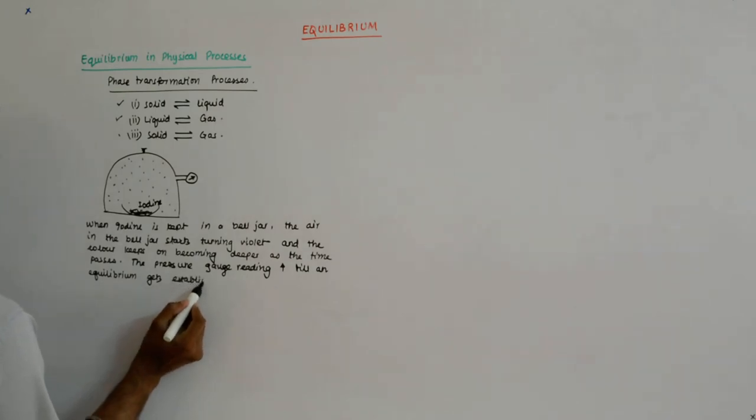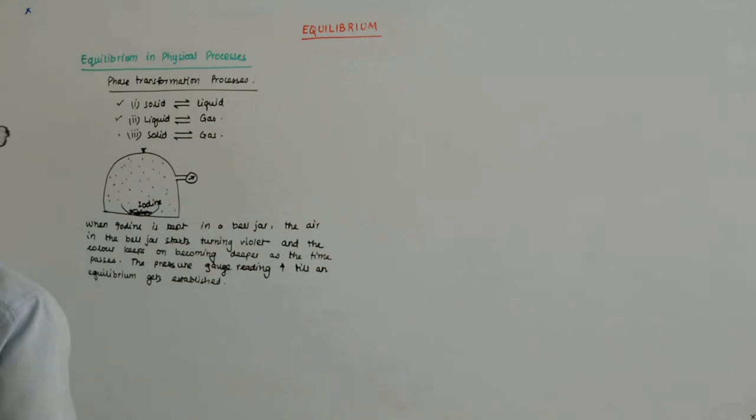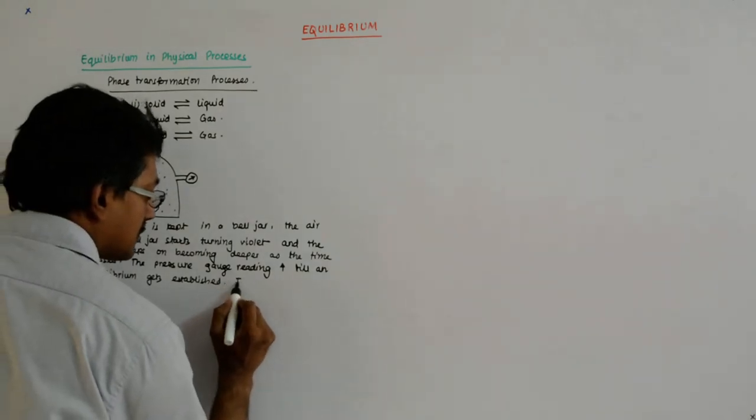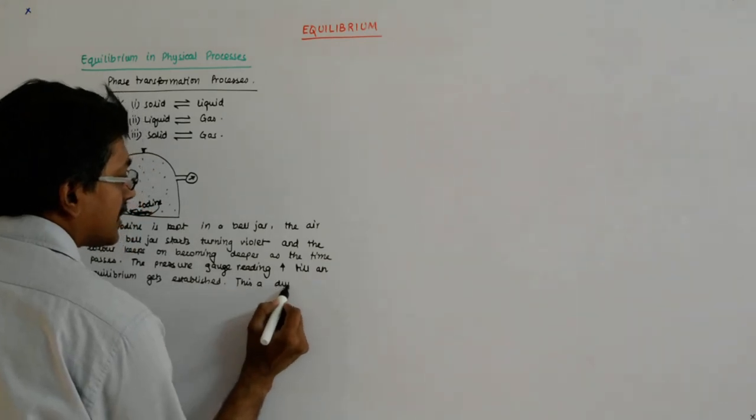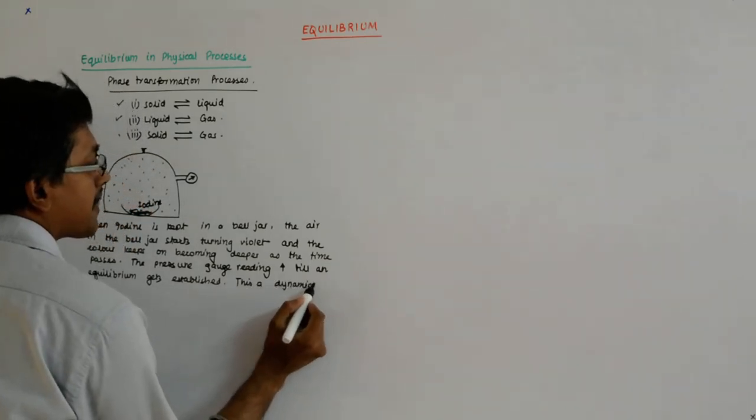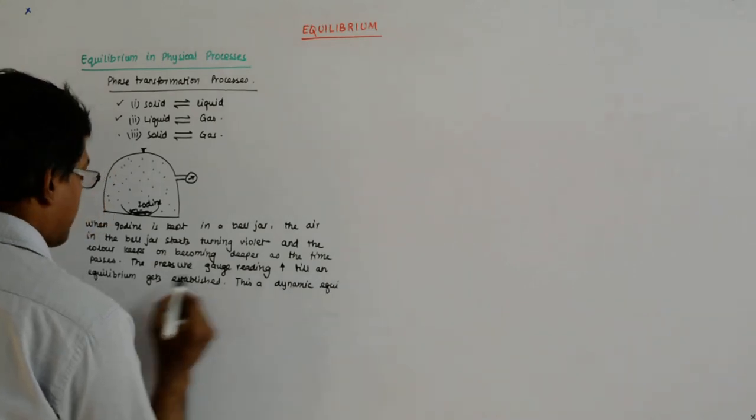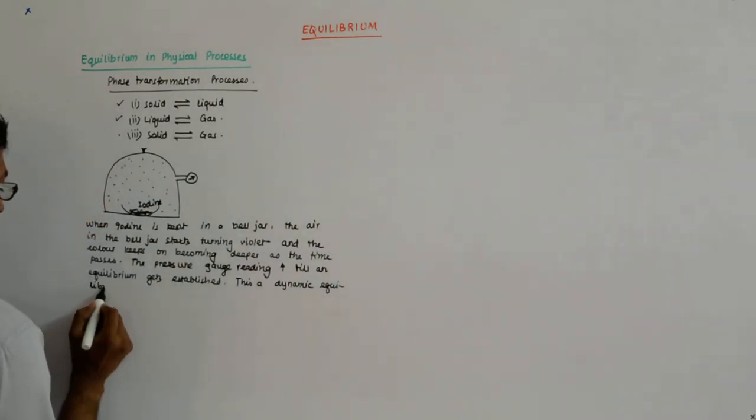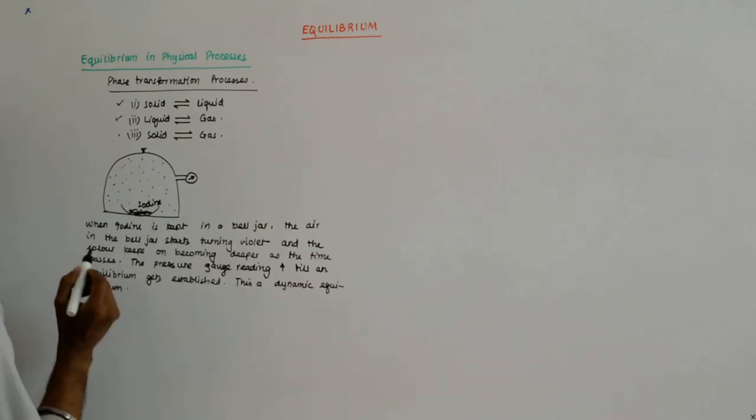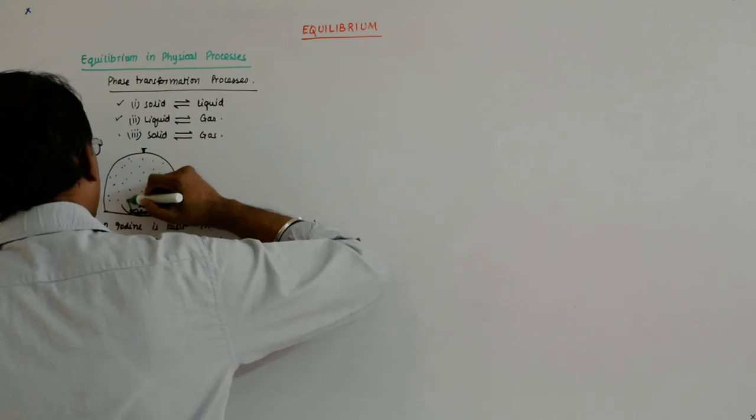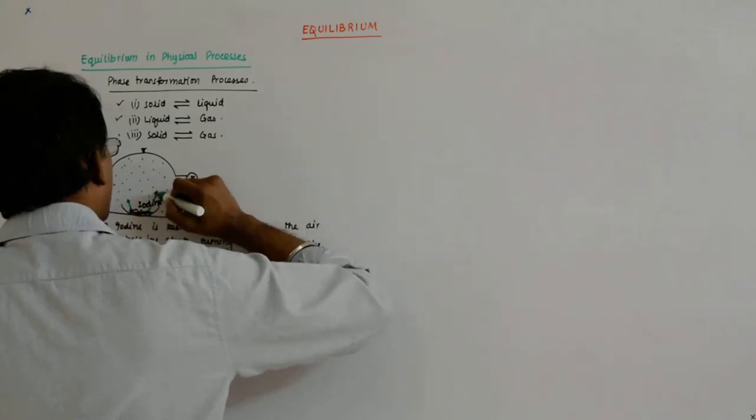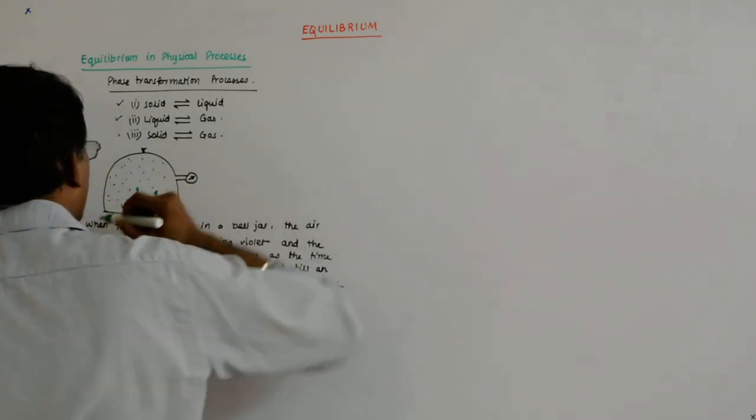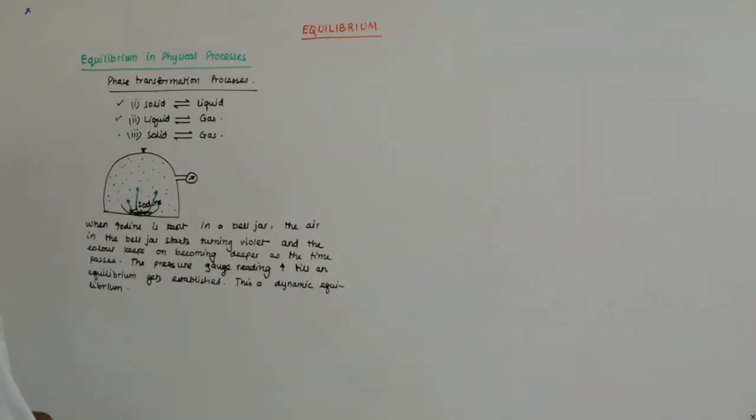Till an equilibrium gets established, and this is a dynamic equilibrium. So what happens here, as we saw earlier, the number of molecules becoming vapor from the solid is the same at equilibrium.